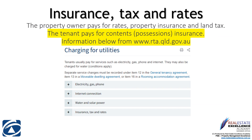During your tenancy it is your responsibility to pay for your own contents and possessions insurance. Refer to the terms of the agreement in relation to electricity, gas, phone, internet, water, or solar power to ensure you're aware of all your responsibilities for connections of such services. The property owner pays for rates, property insurance, and land tax. Our agency strongly recommends that you ensure you have contents and possessions insurance.